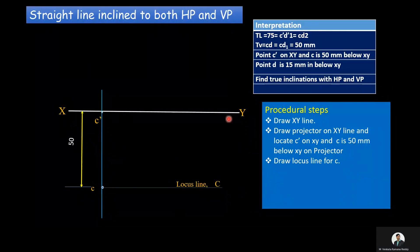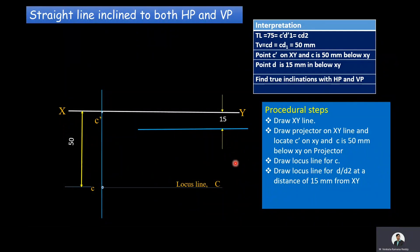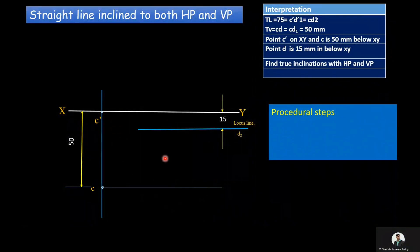The other end D is 15 mm in front of VP, meaning its top view is 15 mm below the XY line. So draw the locus line for D, or D2 — its distance from the XY line is 15 mm. After drawing locus lines for C and D, the top view length is 50 mm. At C, parallel to the XY line, draw a line of length 50 mm and name the end point D1. So CD1 is the top view.